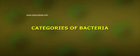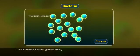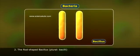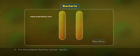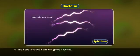Categories of Bacteria: Bacteria are grouped into four categories based on their shape. They are: 1. Spherical — Coccus, 2. Rod-shaped — Bacillus, 3. Comma-shaped — Vibrio, 4. Spiral-shaped — Spirillum.